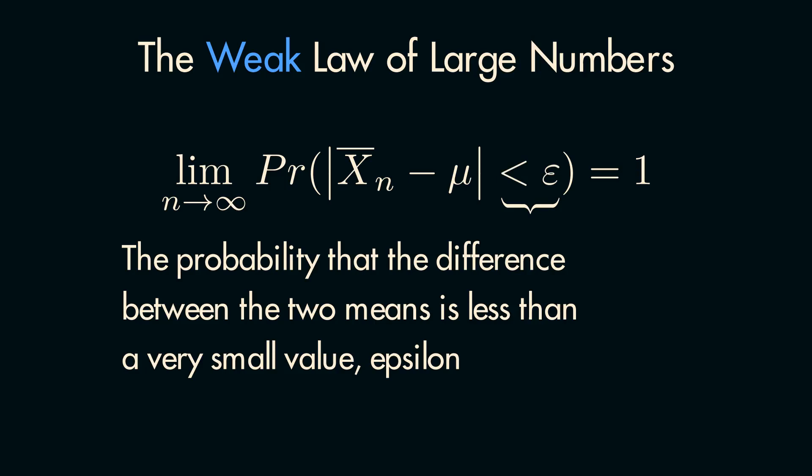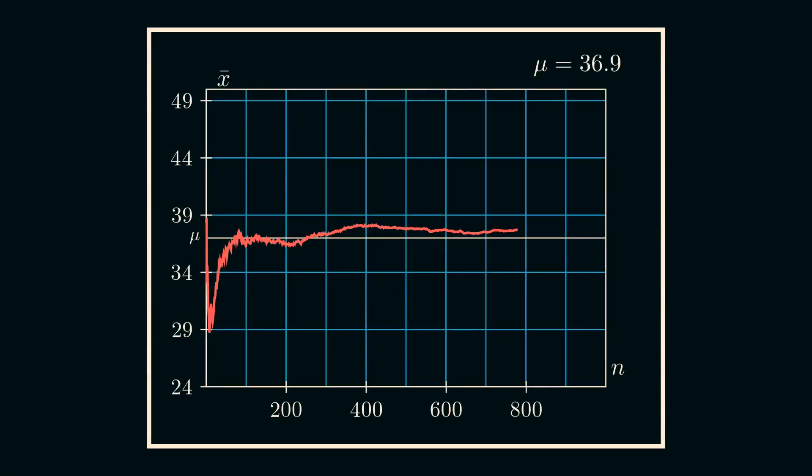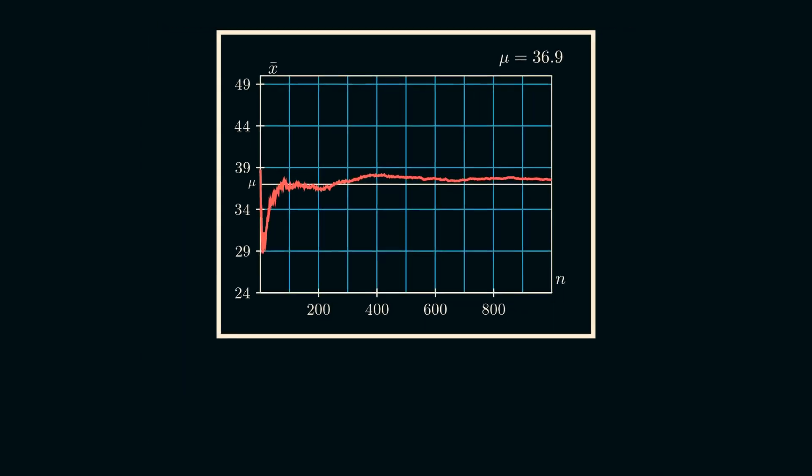Finally, the full definition can be read as: the limit as the number of samples goes to infinity of the probability that the absolute difference between the sample mean and the population mean is less than an infinitesimally small value, or any positive number, is equal to 1. From this extremely wordy description, we can see our initial intuitive idea of this principle pop out.